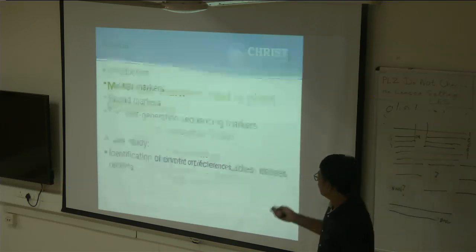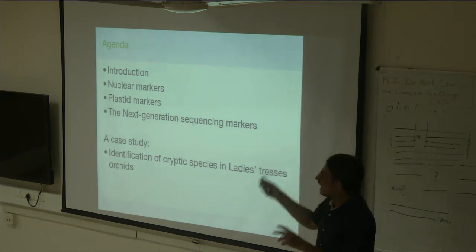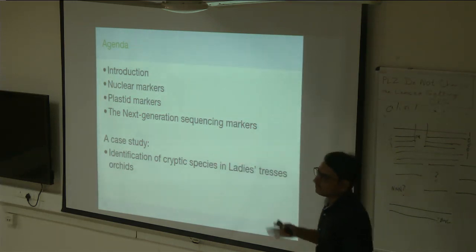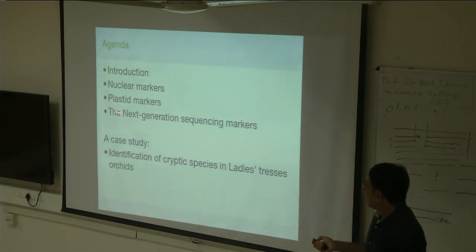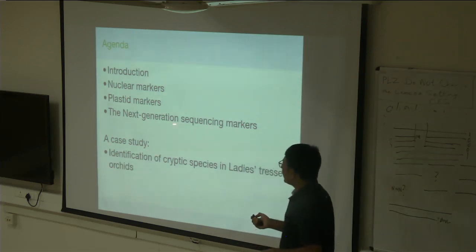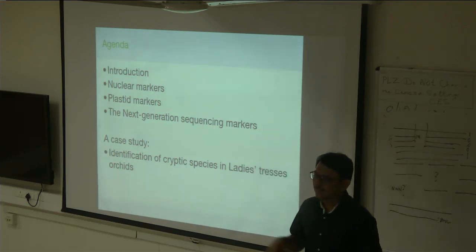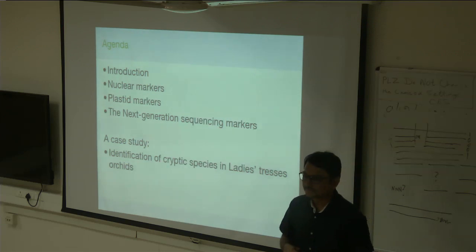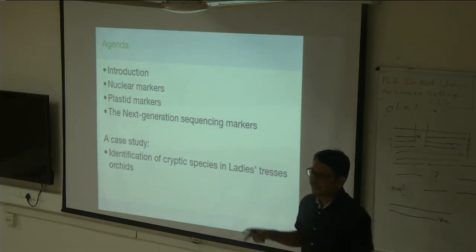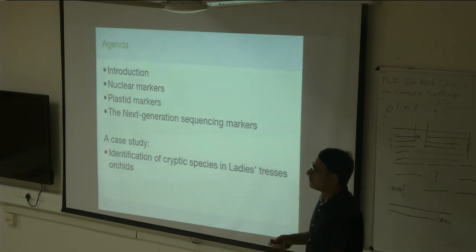Good morning. Today I will be talking about two aspects. One is about markers used in plant phylogenetics. I will briefly touch upon next generation sequencing markers. No one here is using next-gen sequencing for phylogeny, but that is the future. I will be discussing current trends with some examples of published research.